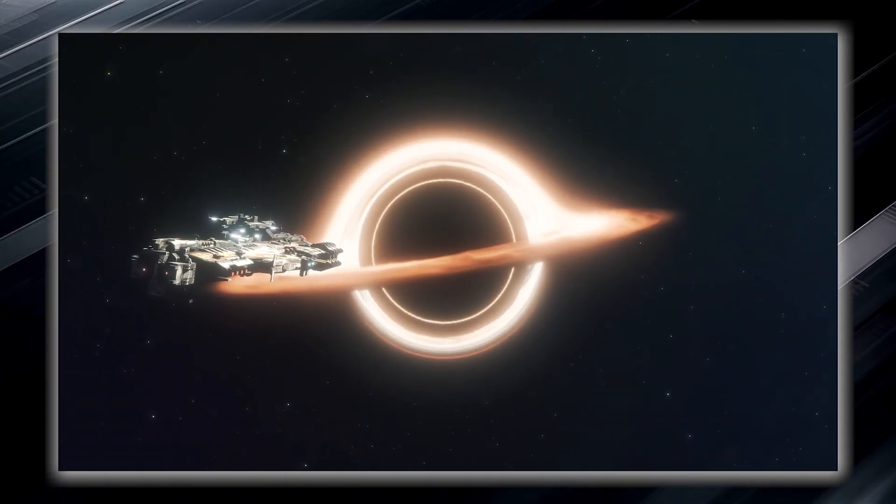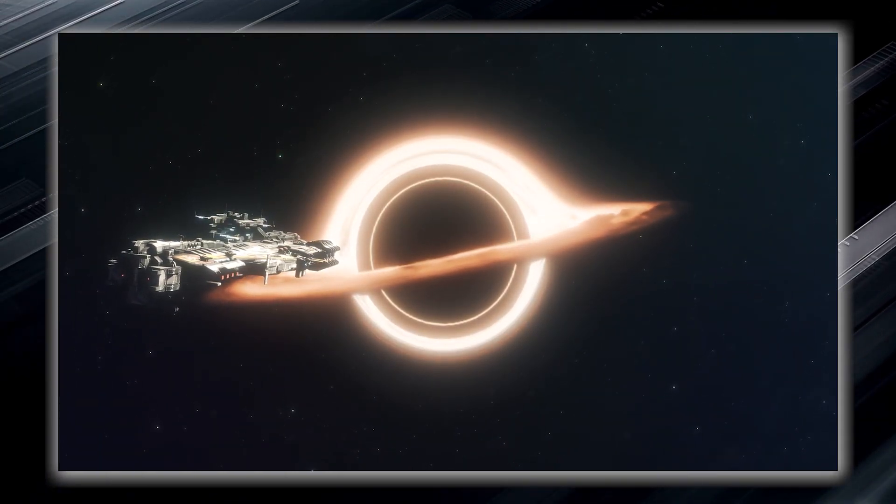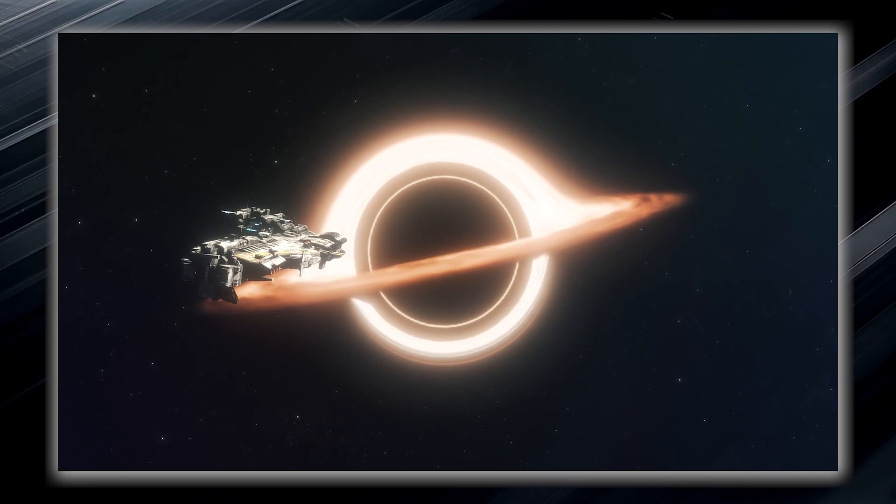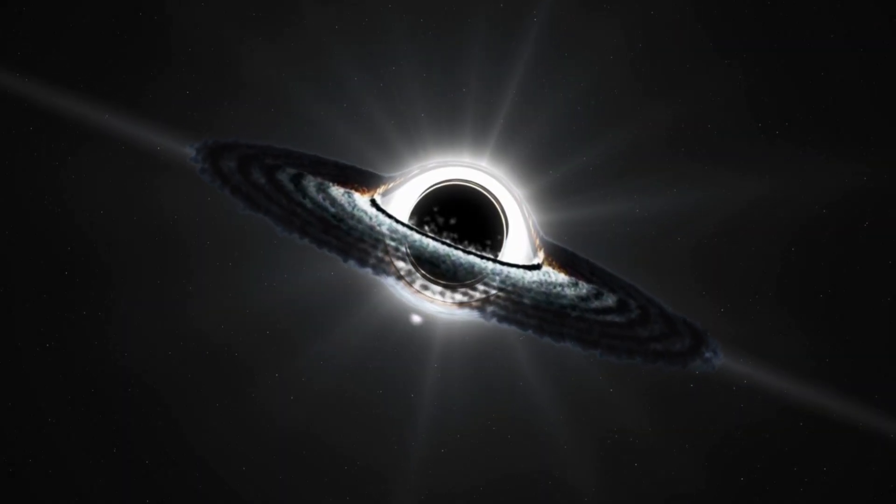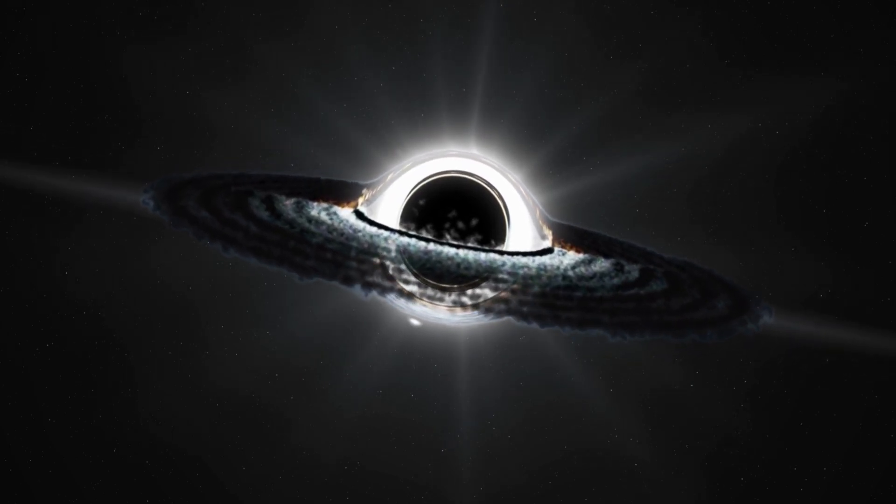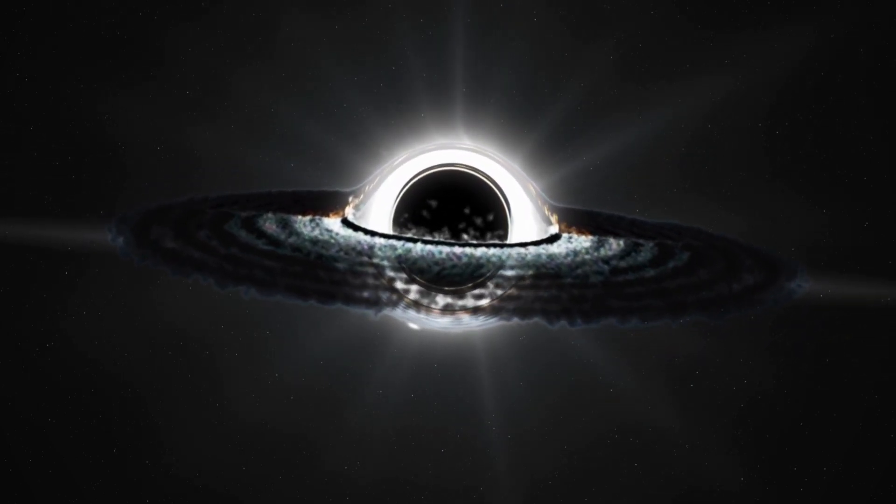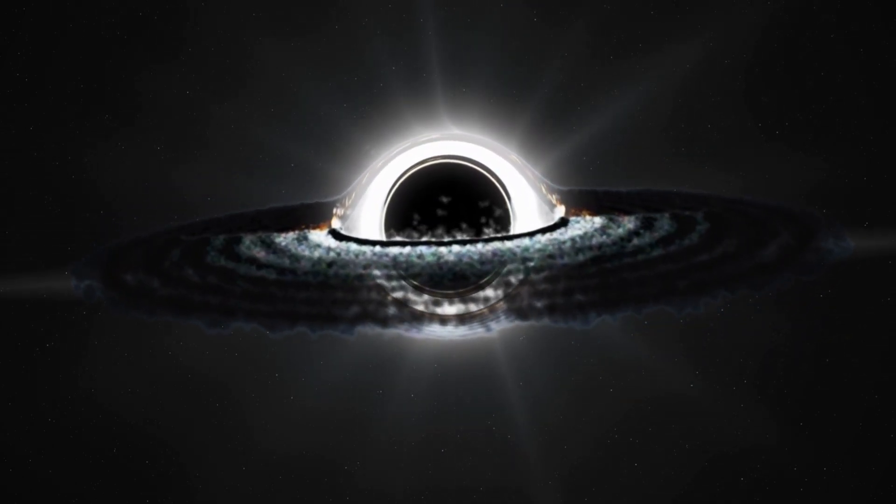Once something, such as an unfortunate spacecraft or even light, crosses its boundary, it can never escape the clutches of the black hole. The event horizon forms an invisible force field that holds everything within it, including light, which is normally considered the fastest entity in the universe.